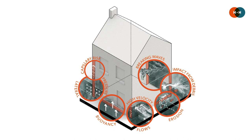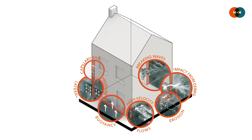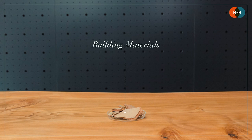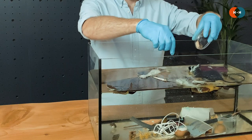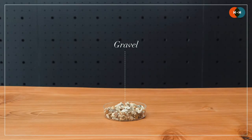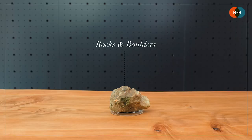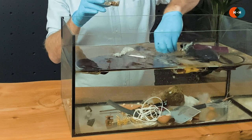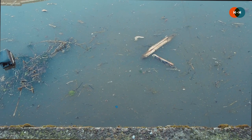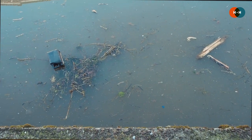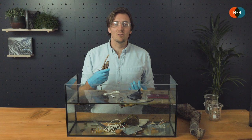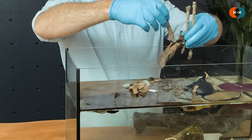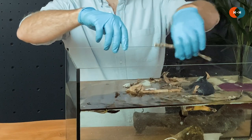Floodwater can also exert significant physical loads on buildings and at times lead to structural damage, so you may well see building materials like bricks and tiles picked up and becoming part of this debris. Those forces will also be shifting gravel from driveways and riverbeds and moving rocks and even large boulders the size of cars. As water washes over fields and land it's also going to be picking up natural debris like leaves, sticks, branches and even trees, which can cause blockages in culverts and bridges with the water that backlogs spreading into surrounding areas.